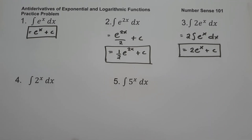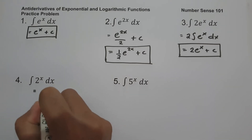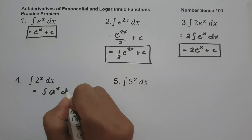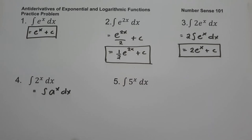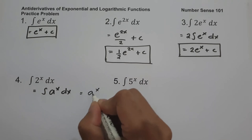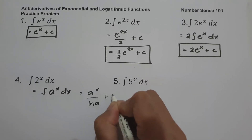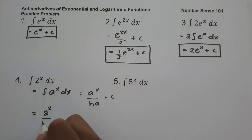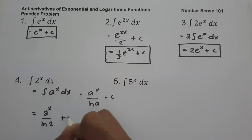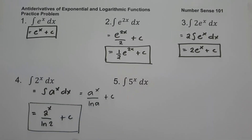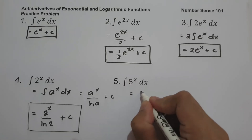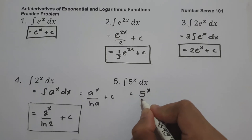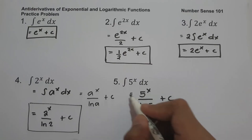On number four, what is the antiderivative of 2^x dx? This is in the form of the antiderivative of a^x dx, which equals a^x over ln(a) + c, with a = 2. So the answer is 2^x over ln(2) + c. On number five, the antiderivative of 5^x dx follows the same formula with a = 5, giving 5^x over ln(5) + c.